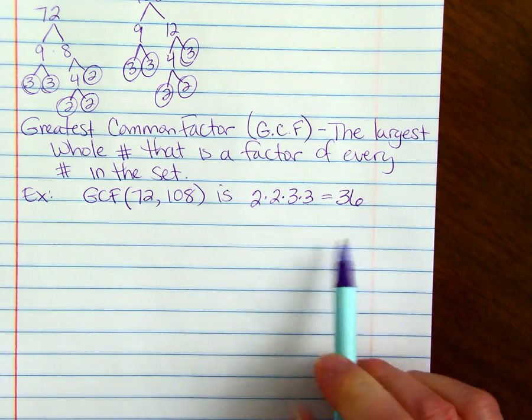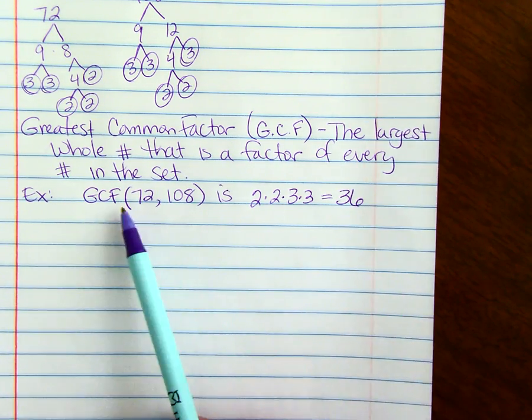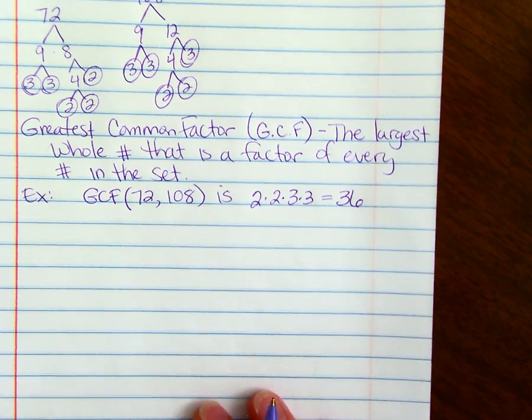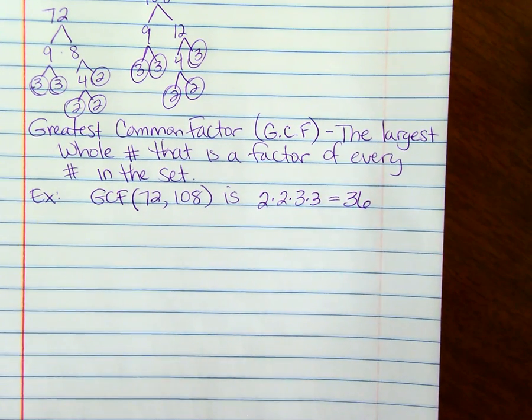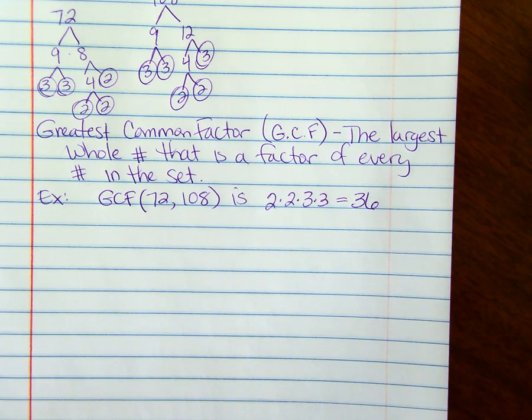36 is the largest whole number that will go into both 72 and 108. If you just find what prime numbers they have in common, multiply them together, and that's your greatest common factor.